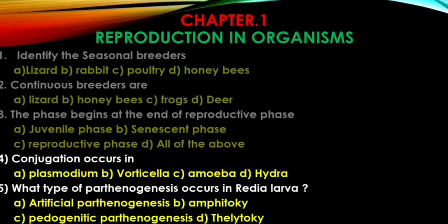Question 5: What type of parthenogenesis occurs in Redia larva of Liver Fluke? The answer is Paedogenic Parthenogenesis.